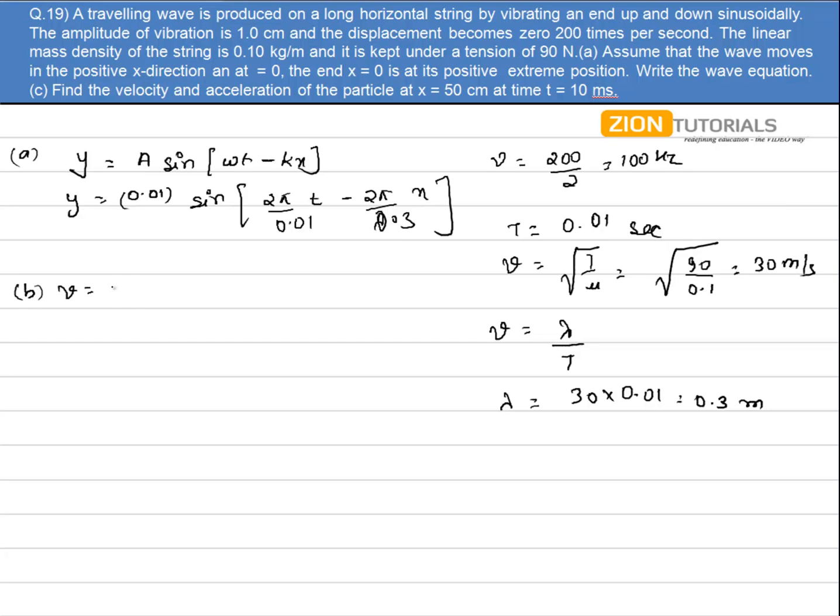Second part, I have to calculate the velocity. It will be given by dy/dt. On differentiating this equation with respect to t, I get 0.01 × 2π/0.01 cos of [2π/0.01 × t]. t is given as 10 seconds, so it will be 10.